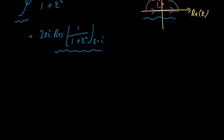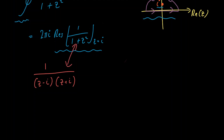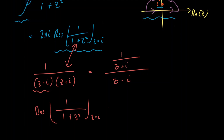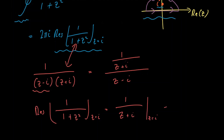Let's rewrite our function 1 divided by 1 plus z² as 1 divided by (z − i) multiplied by (z + i). You can foil this out and confirm these are equal. We want to isolate the divergent part, so we divide everything by z + i, giving 1 divided by (z + i), divided by (z − i). The residue of 1 divided by 1 plus z² evaluated at z equals i is equal to 1 divided by (z + i) evaluated at z equals i, which equals 1 divided by 2i. The residue is what's left over after removing the singular factor corresponding to the pole.